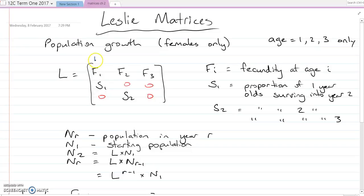Because we're talking about age one, two, and three, each of these columns and each of these rows matches up to a particular age. So F1 is the number of female offspring that each female that's one year old will produce, and so on.